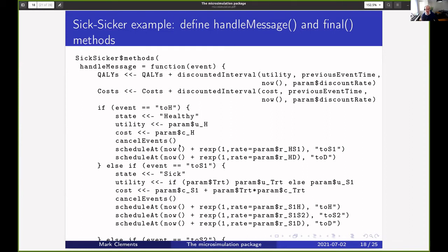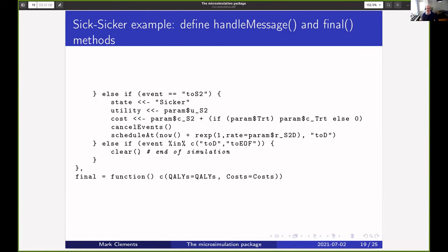If we're actually moving to healthy, then we do pretty much what we had before, but we cancel out any of the existing events except for the end of follow-up. For moving to sick, we change the state, we change the utility, we change the costs, we cancel the events, and schedule three new events. If we move to sicker, we change the state, we change the utilities, we change the costs, we cancel the events, and then we just schedule for going to death. Then if we actually have an event where we go to death or to end of follow-up, we clear and we do nothing else, and that will end the sim.